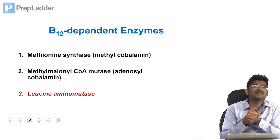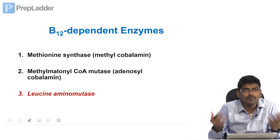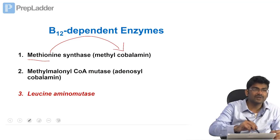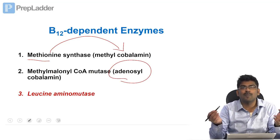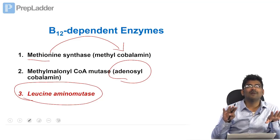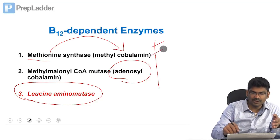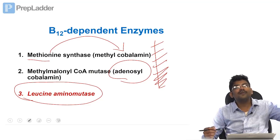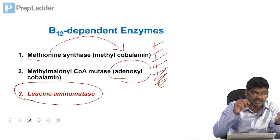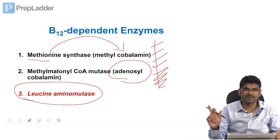Vitamin B12 is required for just two enzymes in the human body: methionine synthase and methylmalonyl-CoA mutase. Methionine synthase utilizes methylcobalamin; methylmalonyl-CoA mutase utilizes adenosylcobalamin. There is one more enzyme, leucine aminomutase, which uses B12, but this enzyme is not present in humans. So we say only two enzymes require B12. However, in exams asking 'all of the following enzymes require B12 except,' do not tick leucine aminomutase — it is B12-dependent but not present in humans.